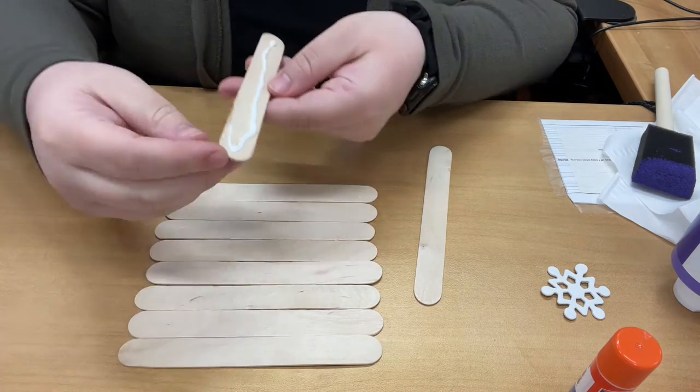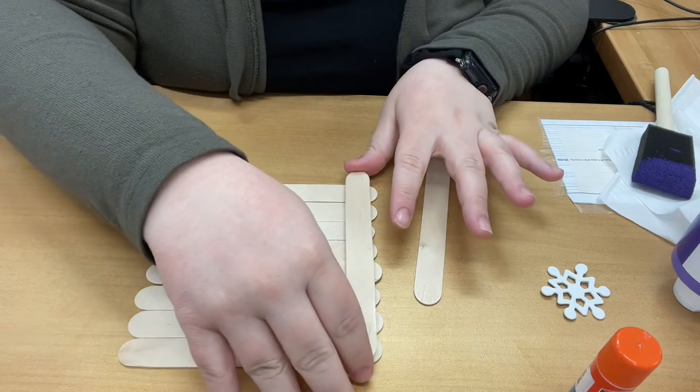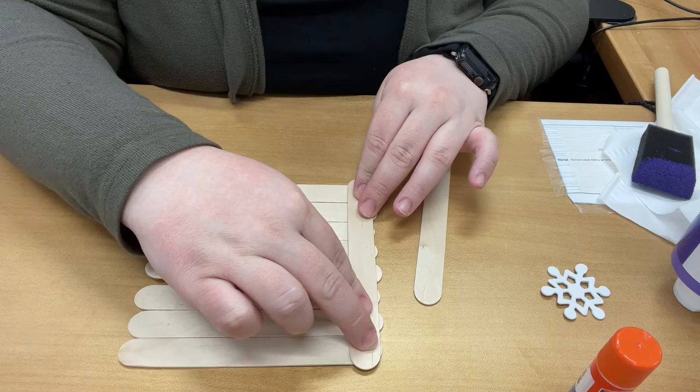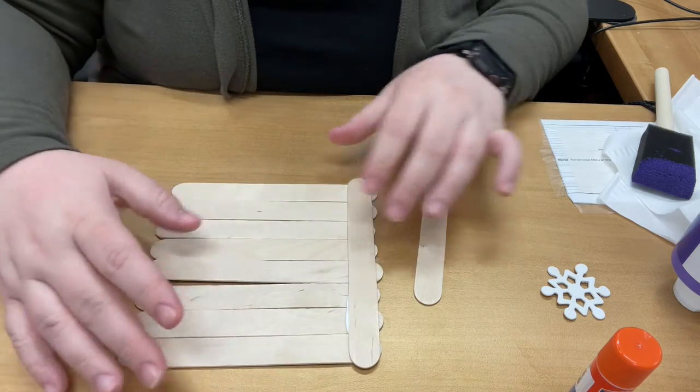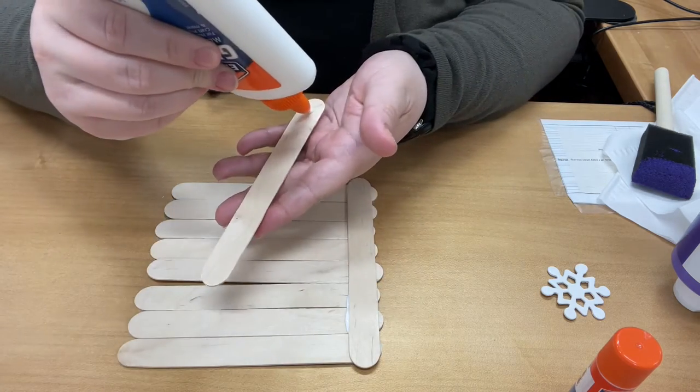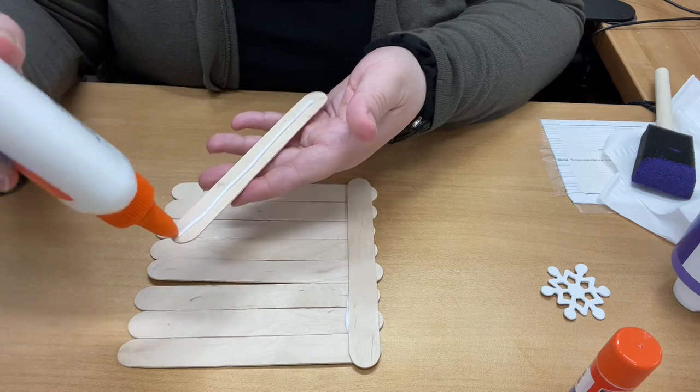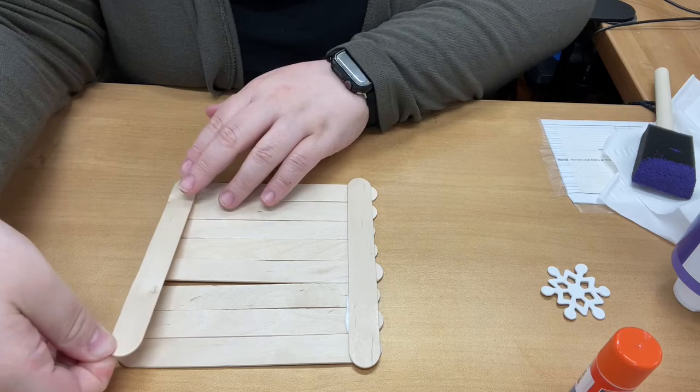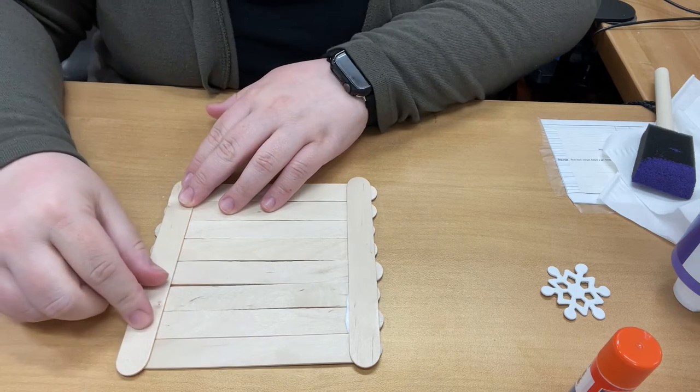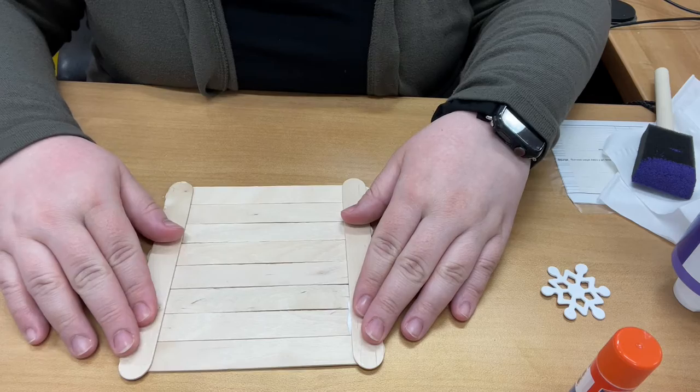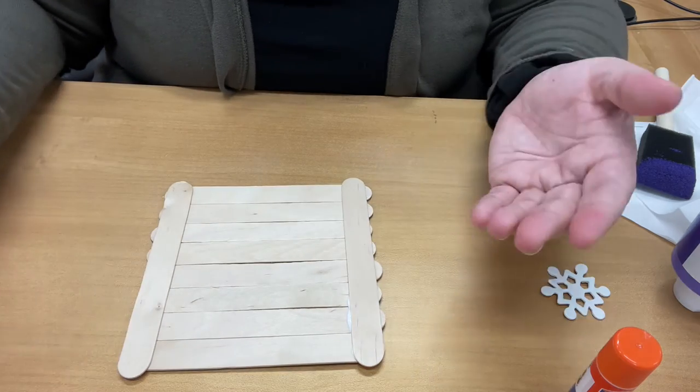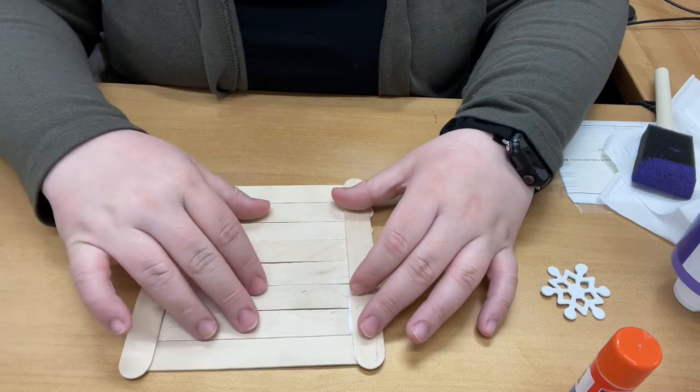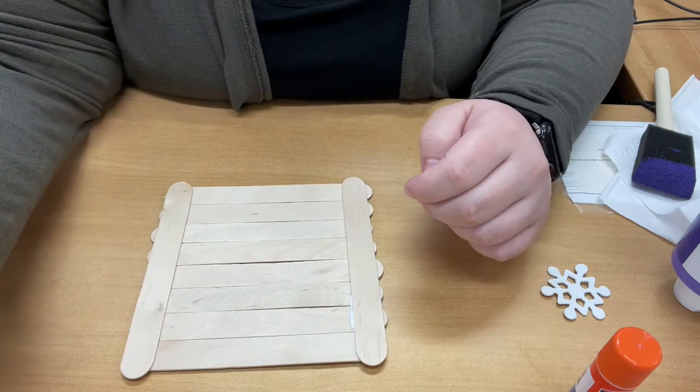And then once you put the glue on, you're going to go like this. You're going to want these at the edge. Just kind of press down. Do it again. And what you're going to want to do is let this dry. I'd say give it at least like 30 minutes just because you want it to be really nice and firm.